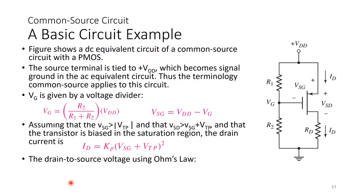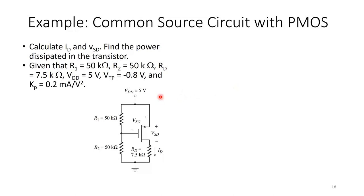Once you know VG and ID — and hence VSG — you can do Ohm's law to find VD: VD equals IDRD. Then VSD equals VDD minus VD, which equals IDRD. VS here is connected to VDD, so to find VSD it's VDD minus VD. Now let's do a PMOS common source example. The drain is connected closer to ground, RD is closer to ground as well, and the source is connected to VDD. Values: R1 = R2 = 50 kΩ, RD = 7.5 kΩ, VDD = 5 V, VTP = −0.8 V, KP = 0.2 mA/V².